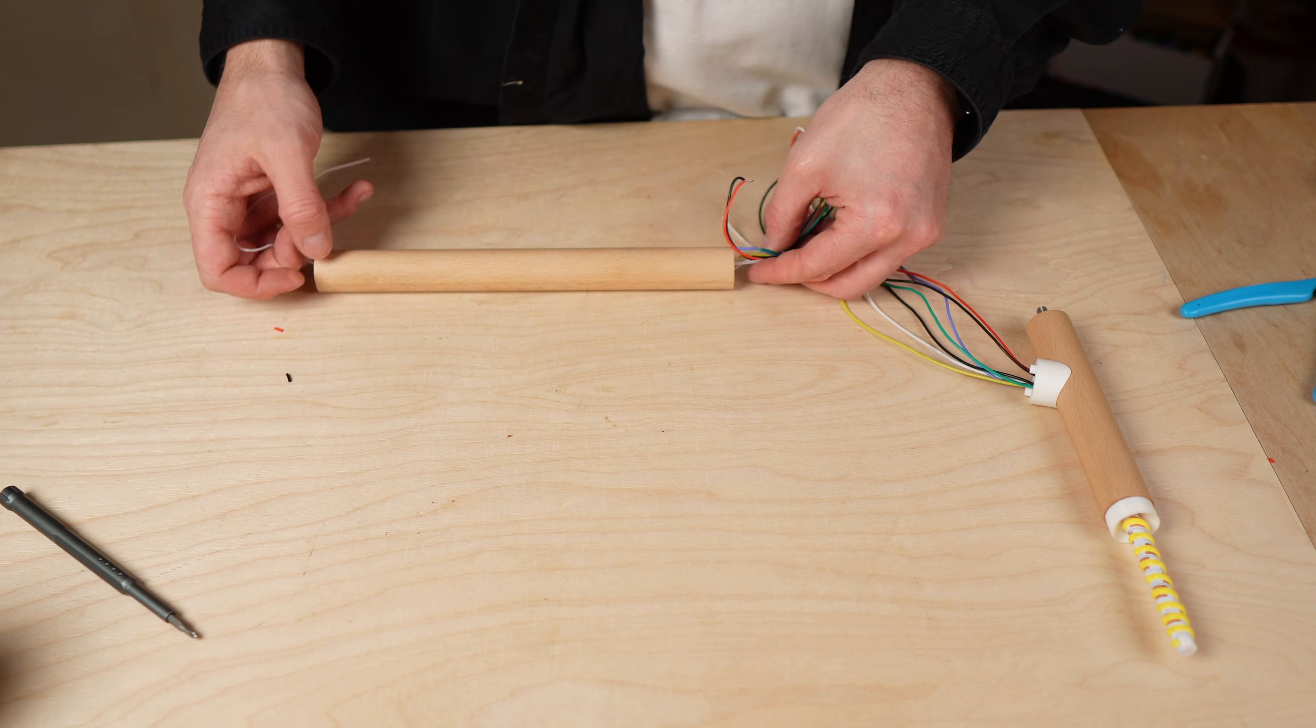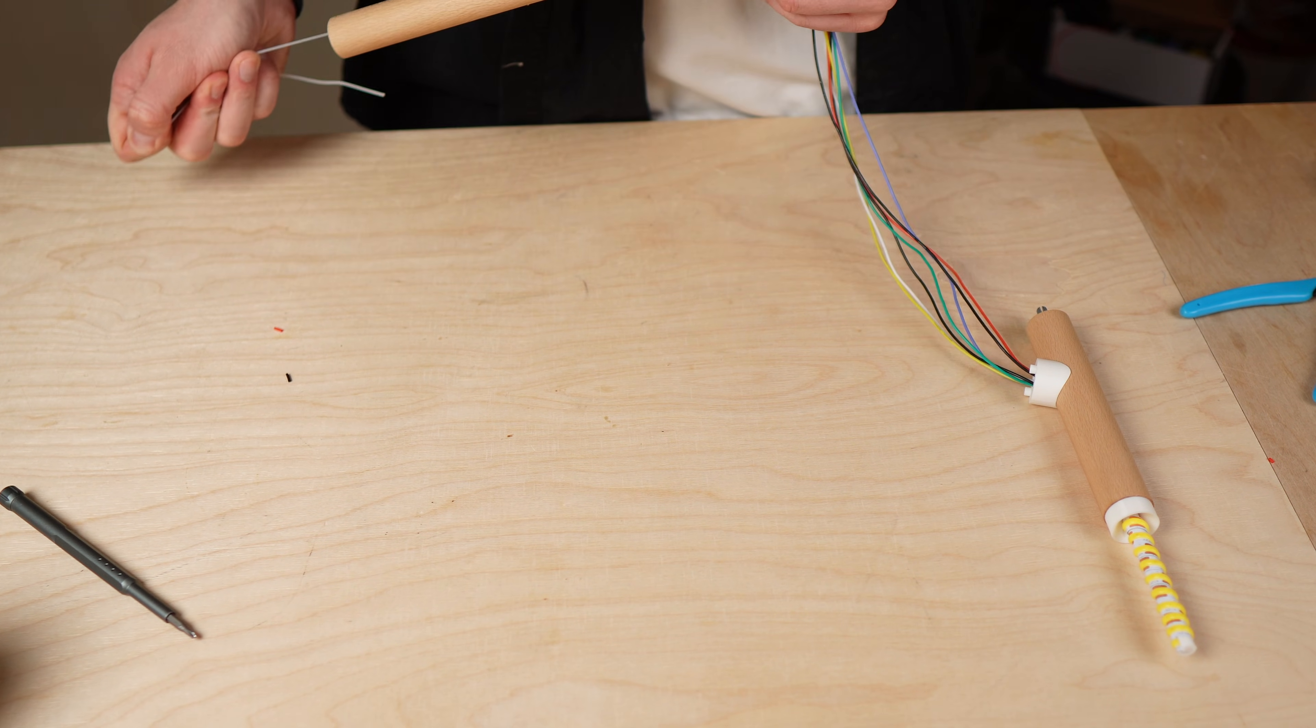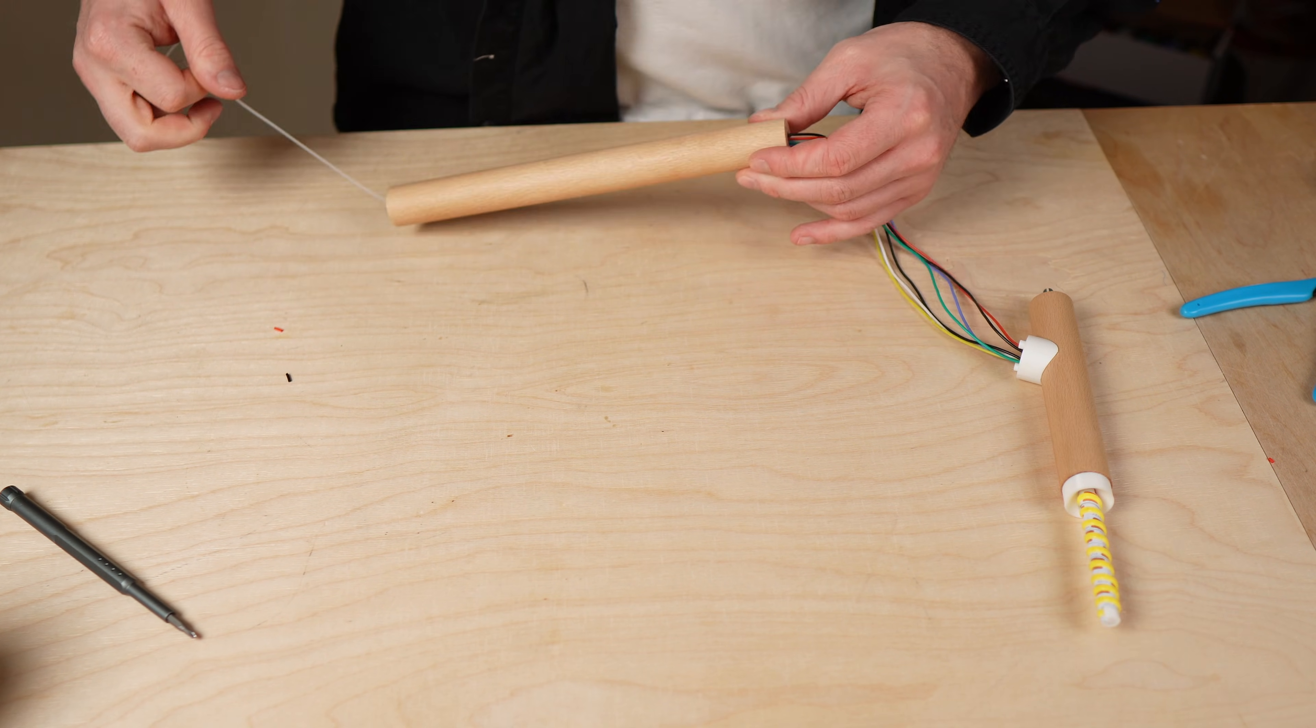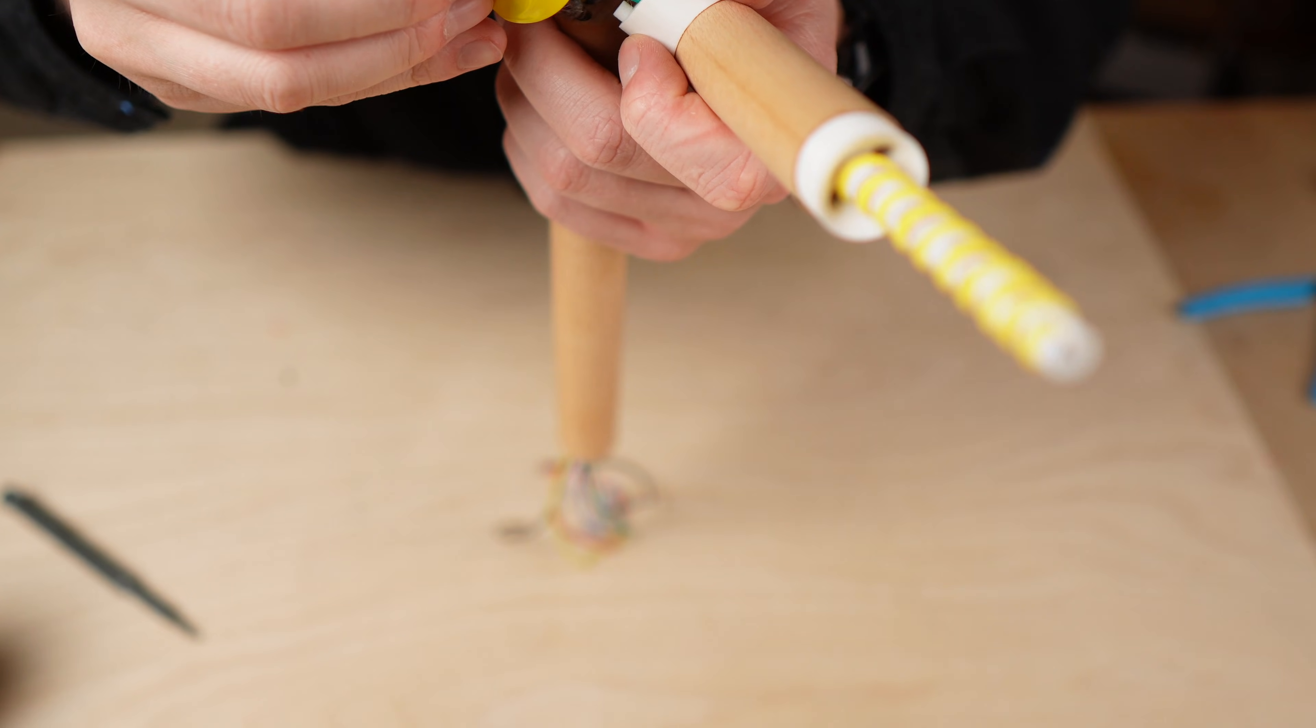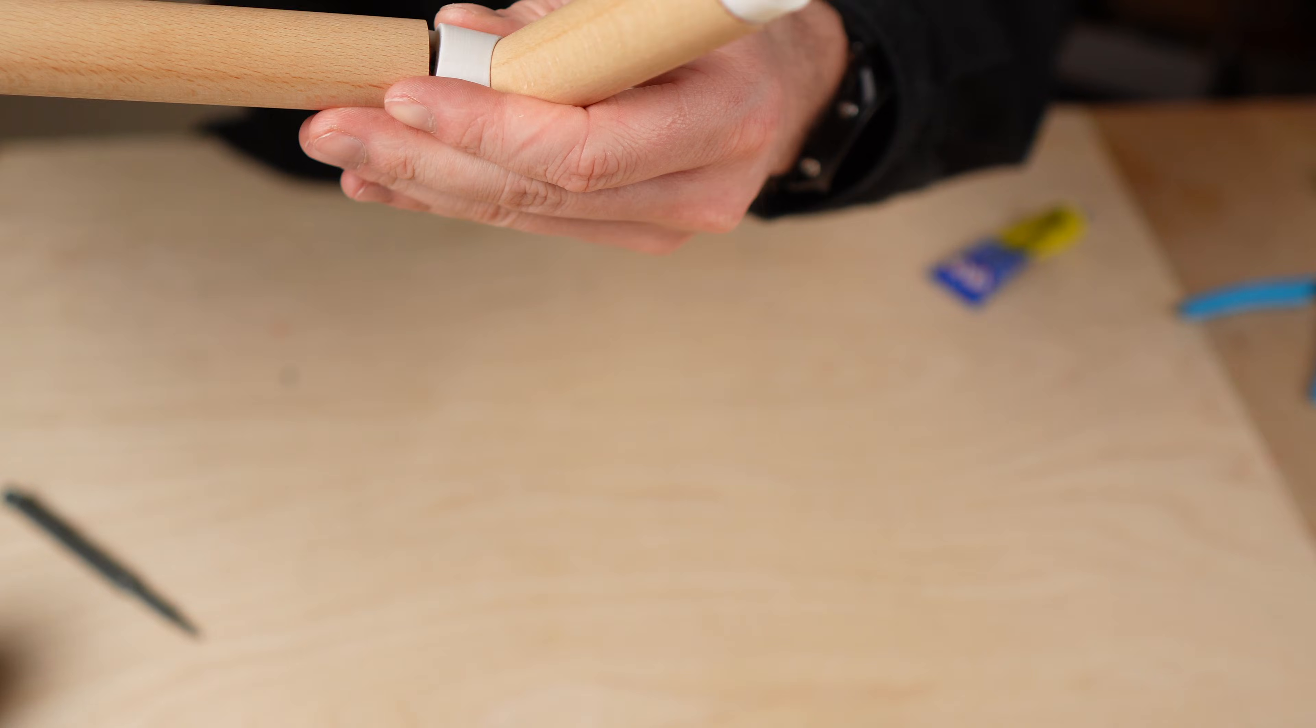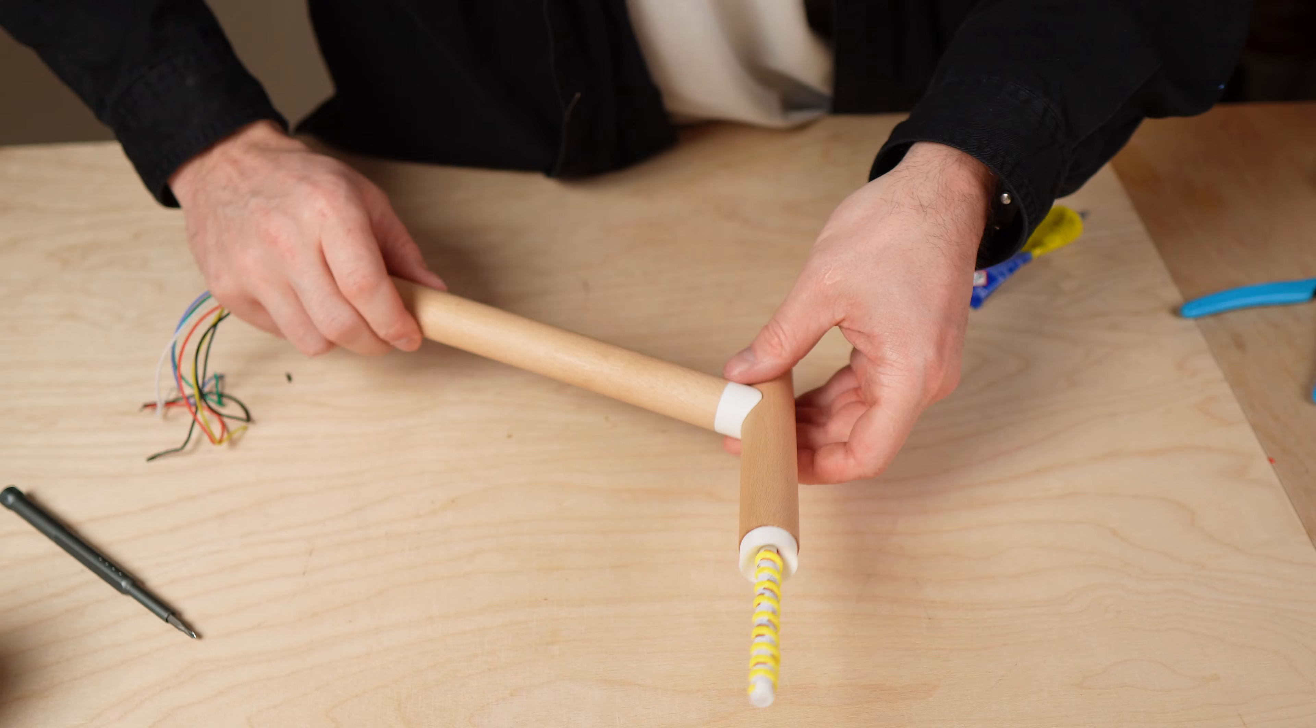A small tip here: I used a short piece of TPU filament to pull the cables through the wooden tube. Make sure the cables are long enough so they can still be connected later inside the base. The longer wooden dowel was aligned using two small 3D printed dowels and then glued in place. This creates a clean and seamless transition.